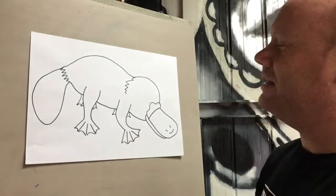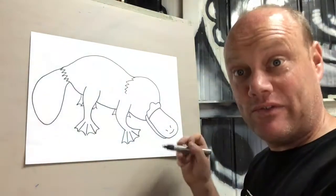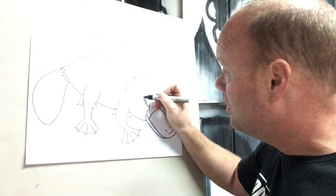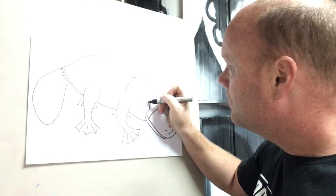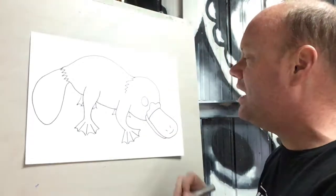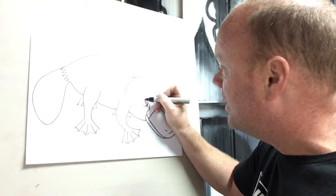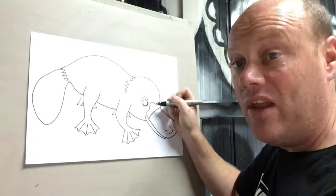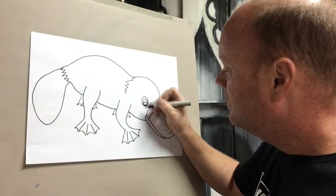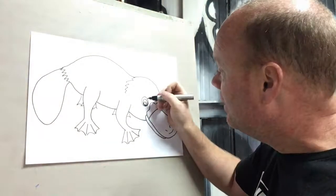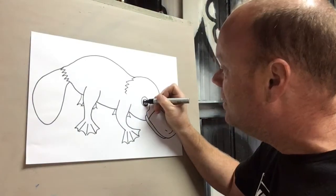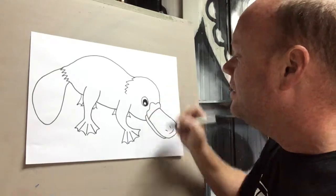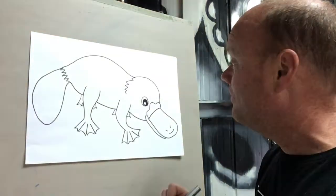And now all I'm missing is that I've got to give him an eye. So again, I'm just going to do a nice big circle here. Then I'm going to do another circle on the inside, and then another little circle on the inside. And then I'm going to just color that inside circle in, just to leave the outside and the inside circle white, just to give him an eye like that. I'm going to even just give him a little eyebrow as well, just like that.